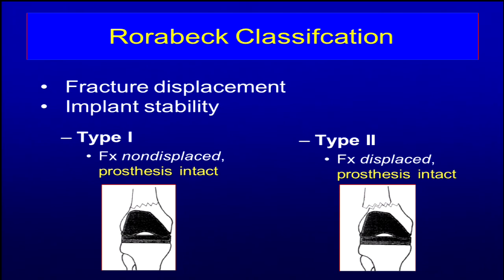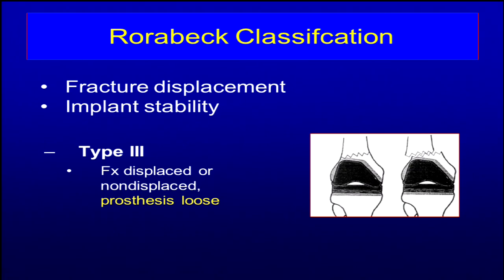Most of these are displaced fractures. Type 2 has an intact prosthesis and a displaced fracture, so that's most periprosthetic distal femur fractures. Then there's the Type 3, where the difference is that the prosthesis is unstable — you have a loose implant. They may have been having preoperative pain. Maybe the implant went in 15 or 20 years ago. This is something you really have to talk to the patient about and look for on a good lateral x-ray to see if the prosthesis is stable.